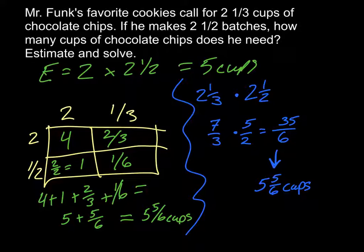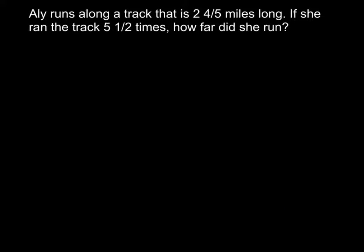Try one more on your own. Ally runs along a track that is 2 and four-fifths of a mile long. If she ran the track 5 and a half times, how far did she run? It doesn't say to estimate, but it's always a good idea to do that first just to make sure your solution is in the right ballpark. Go ahead, pause the video, solve it, and then I'll show you how I did it.